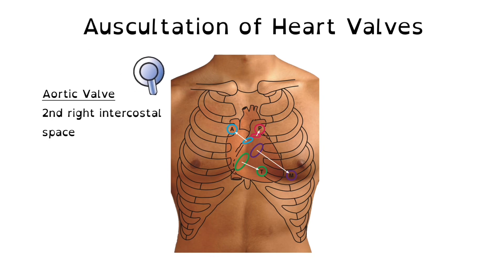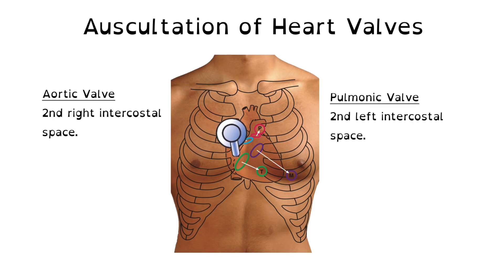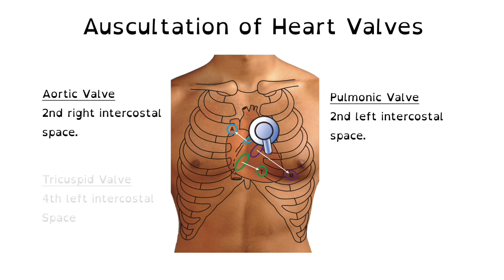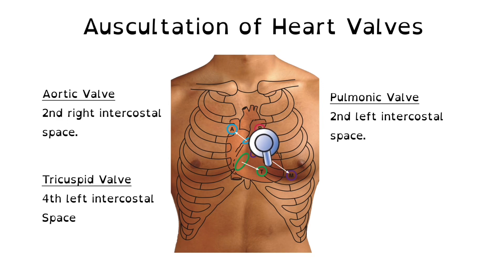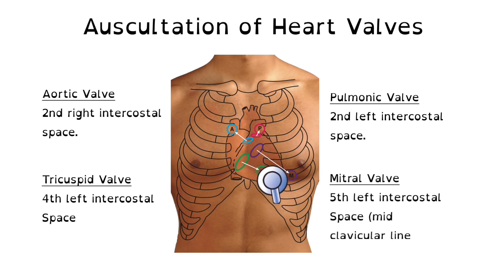When auscultating for the aortic valve, you want to go to the second right intercostal space. Auscultation of the pulmonic valve will be at the second left intercostal space. The auscultation for the tricuspid valve will be at the fourth left intercostal space. When auscultating for the mitral valve, you want to go to the fifth left intercostal space at the mid-clavicular line.